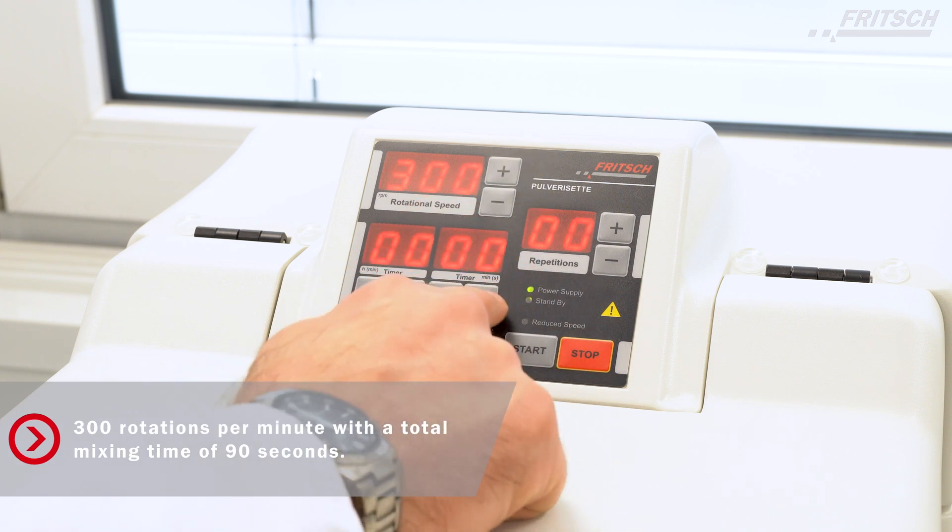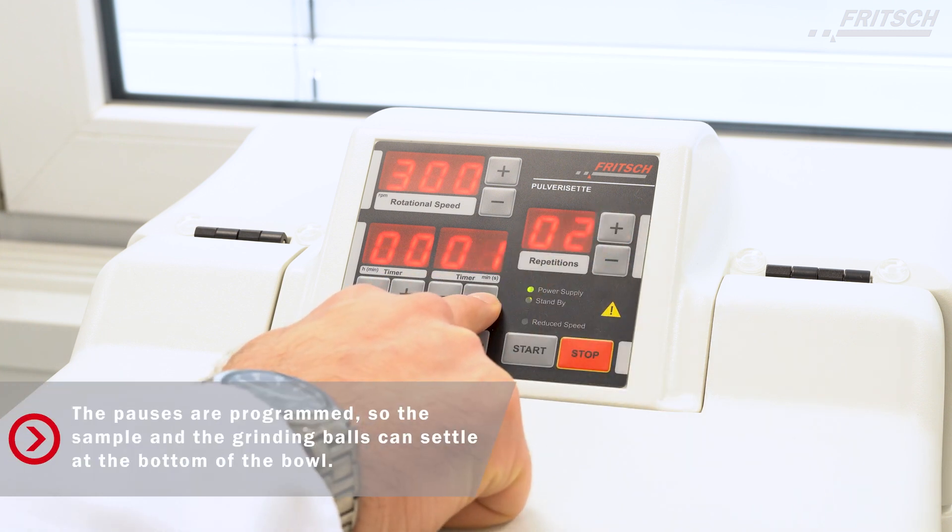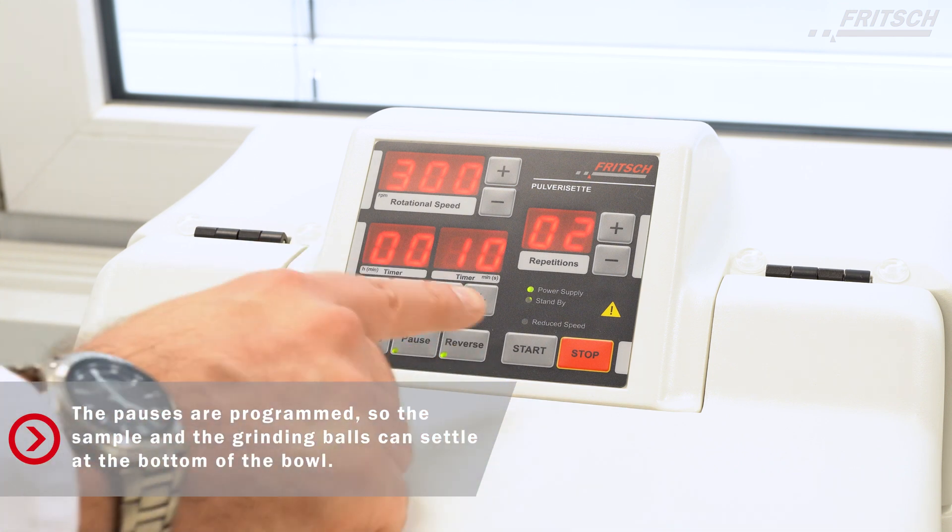The instrument is set to run with 300 rotations per minute for 30 seconds with two repetitions. In between those repetitions are 10-second pauses, so the sample and the grinding balls can settle at the bottom of the bowl.